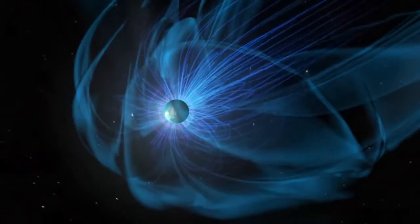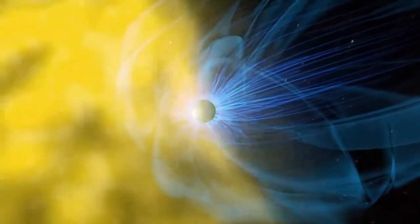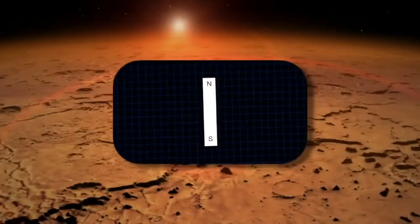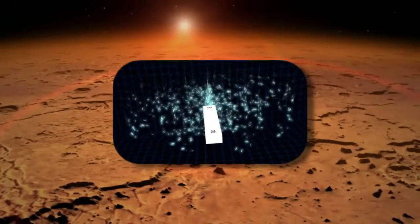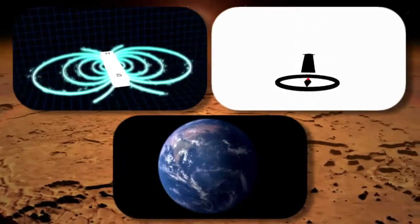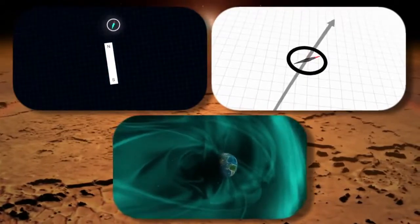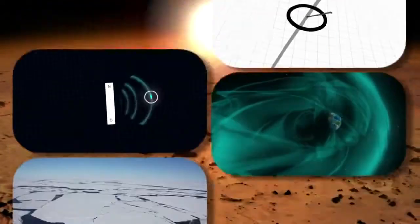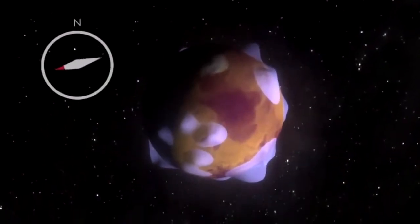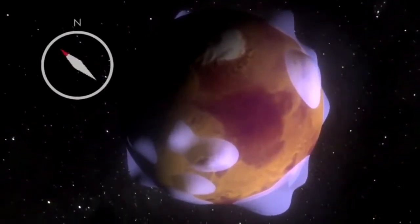Magnetic fields can be measured in a variety of ways, and the most simple way is with a compass. The Earth's field is global in nature, so it has a north pole and a south pole, and wherever you go on the surface of the Earth with a compass, it will point to the north pole. But on Mars, if you were to walk around with a compass, it would haphazardly point from one anomaly to the other as you walked across the surface.